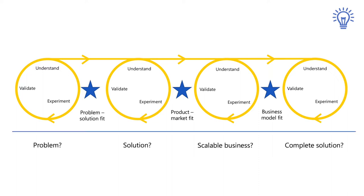To achieve problem-solution fit, we need to have more proof about what exactly is the problem that we need to solve. When we go to product-market fit, we need to understand what solution would be the best solution. When we achieve business model fit, we need to understand how we can make a scalable business out of this. And finally, we also need to be able to deliver a complete solution.